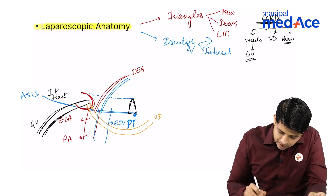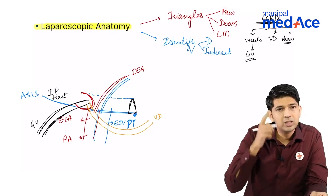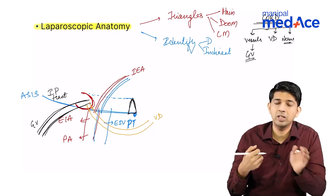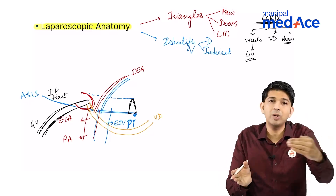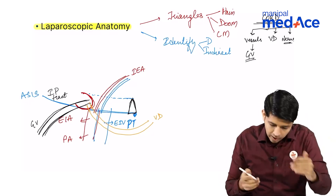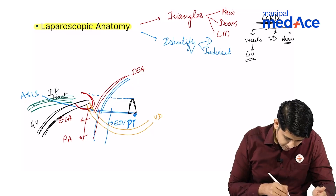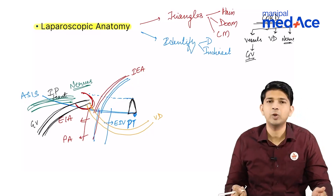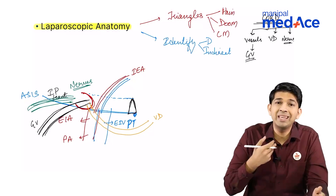The last cord structure is the nerves. Nerves also have to arise from the spinal cord, which is also a retroperitoneal structure. So from the spinal cord, if it has to reach the anterior abdominal wall, that also has to come through the lateral route. So nerves are going to come laterally in this particular area. This is the laparoscopic anatomy which we are seeing from the inside.